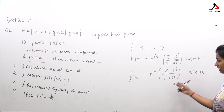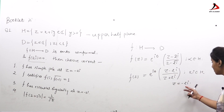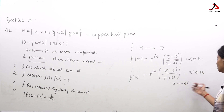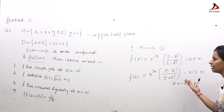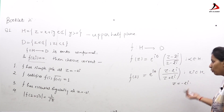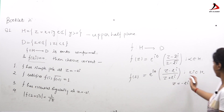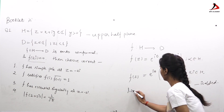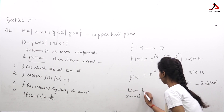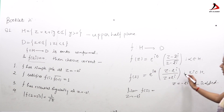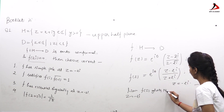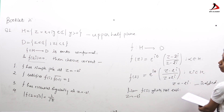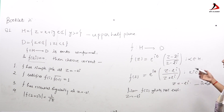At z = −2i, the function has an isolated singularity. To classify it, we check the limit as z → −2i of f(z). This limit does not exist, so the singularity is not removable.